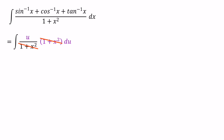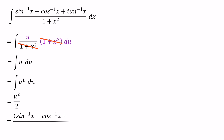Now we need to integrate u, which we can write as the integral of u to the power of 1. The result is u squared over 2. Finally, substituting back the value of u, we get the final answer as sin inverse x plus cos inverse x plus tan inverse x, all squared, over 2.